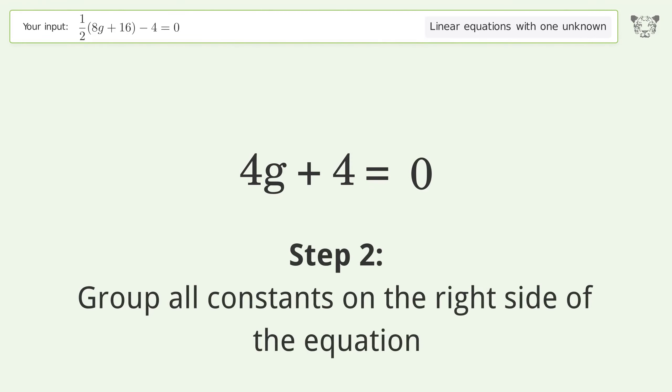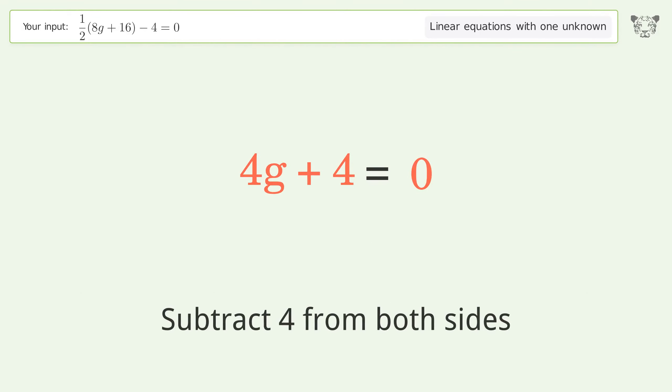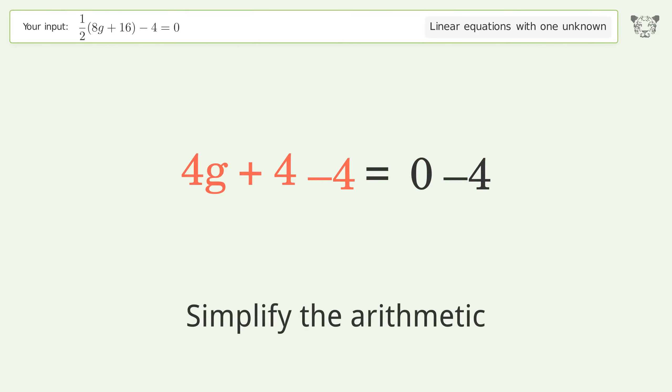Group all constants on the right side of the equation. Subtract 4 from both sides. Simplify the arithmetic.